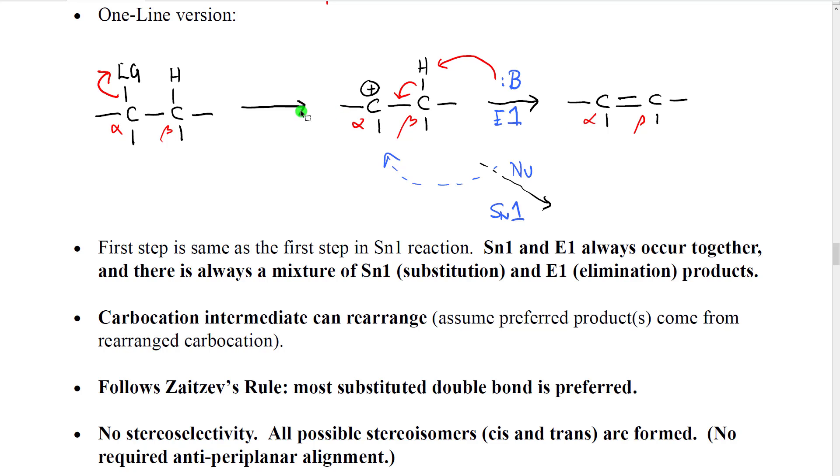Now the significance of this is that the first step is exactly the same first step as we saw in our SN1 reaction in the previous section. So what we find then is that SN1 and E1 generally always occur together. And there's generally always a mixture of SN1 and E1 products.